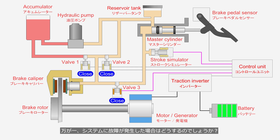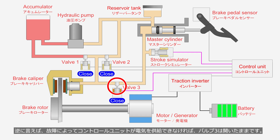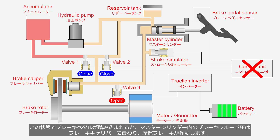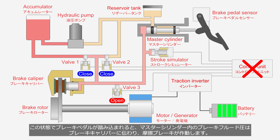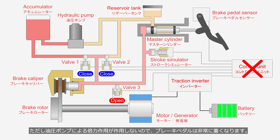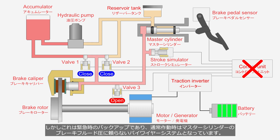What happens if the system fails? When the driver turns the system on, valve 3 is supplied with electricity and closes. If a failure occurs and the control unit cannot supply electricity, valve 3 remains open. In this state, when the brake pedal is depressed, brake fluid pressure from the master cylinder is transmitted directly to the brake calipers and the friction brake operates — however, since power assist from the hydraulic pump is absent, a great amount of force is required. This is only an emergency backup; during normal operation it is a brake-by-wire system that does not rely on master cylinder brake fluid pressure.